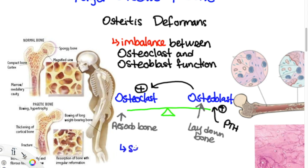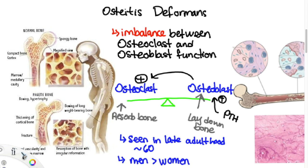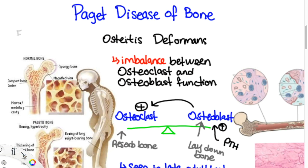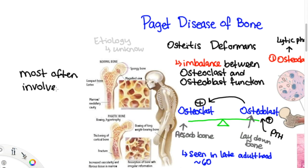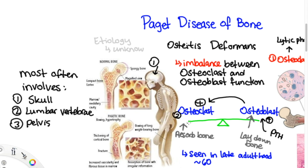This disease is usually seen in late adulthood, at approximately age 60. Additionally, it is more common in men than women. The etiology of this disease is unknown. This disease most often involves the skull, the lumbar vertebrae, the pelvis, and the femur.